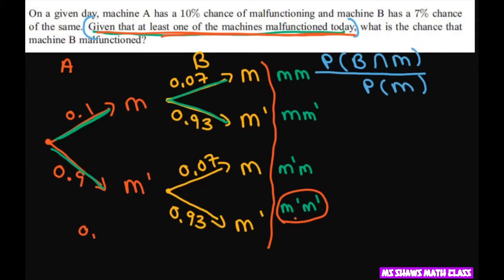That's 0.9 times 0.93. And if you multiply that out, you're going to get 0.837.